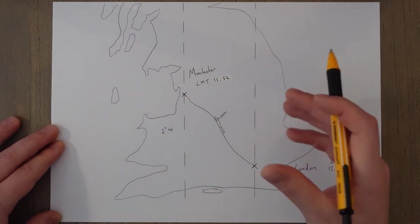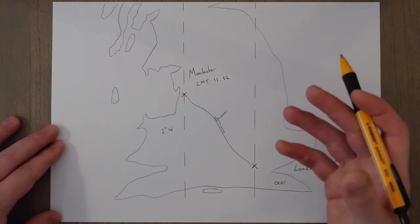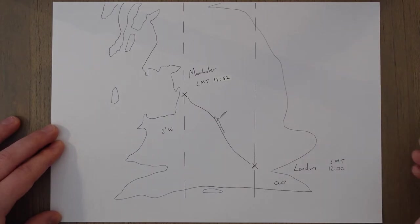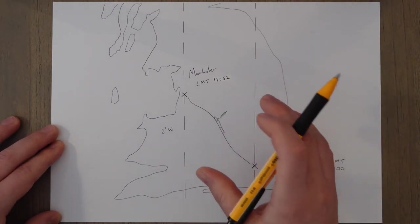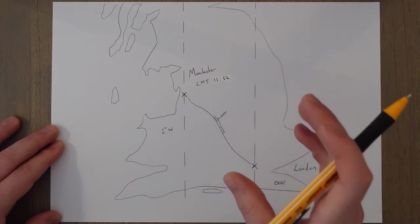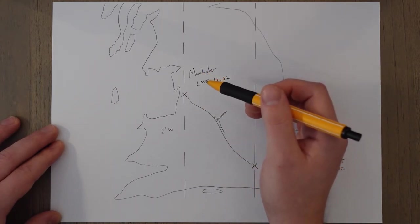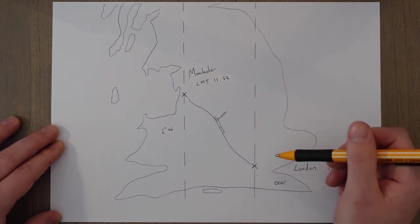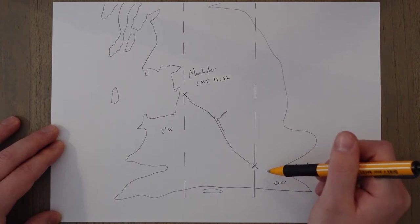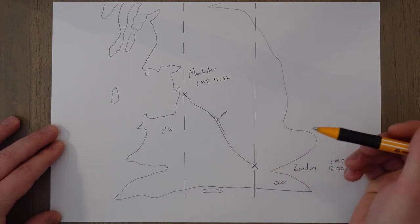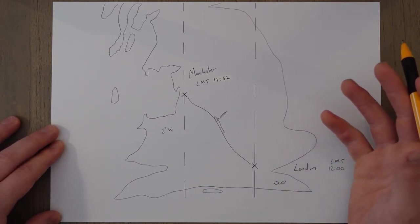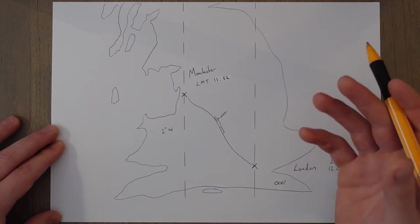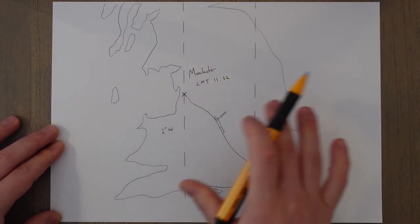So it was all a bit confusing and they came up with a solution which was time zones. So this moved the whole of the UK onto one time zone where the whole country aligned their time with the local meridian time at the Greenwich Observatory in London. And the time zone of GMT was invented, the Greenwich meridian time, and it smoothed out this whole process.